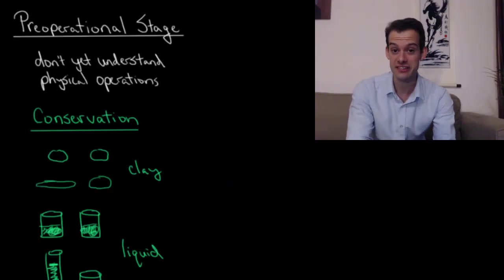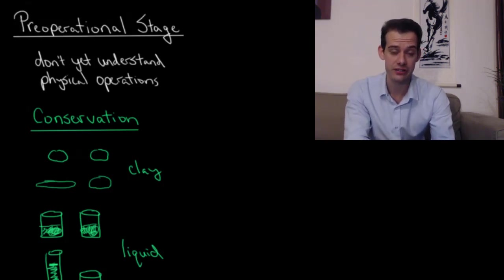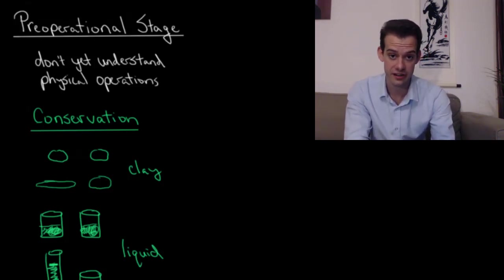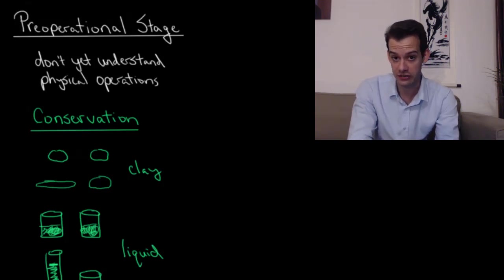Hi, I'm Michael Corayer and this is Psych Exam Review. In this video we're going to look at the pre-operational stage of Piaget's Theory of Cognitive Development along with some related topics. The pre-operational stage is the second stage in Piaget's Theory and it lasts from about age 2 to about age 6.